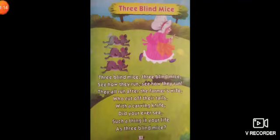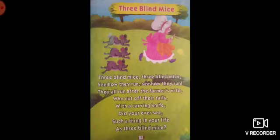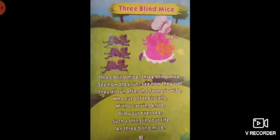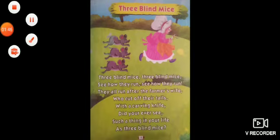Students, repeat it again with me. Three blind mice. See how they run. They all run after the farmer's wife. Who cut off their tail? With a carving knife. Did you ever see such a thing in your life? As three blind mice.